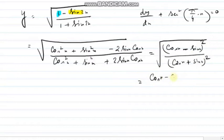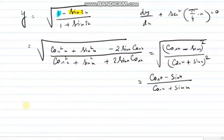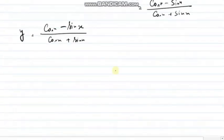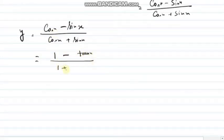So ultimately it will be (cos x minus sin x) divided by (cos x plus sin x). After this, we need to apply the concept of trigonometry again. So y equals (cos x minus sin x) divided by (cos x plus sin x). Whenever you see this type of sum, first divide by cos x.